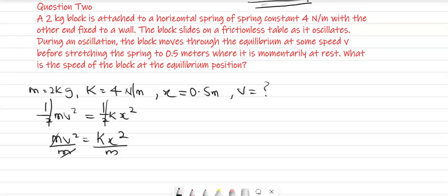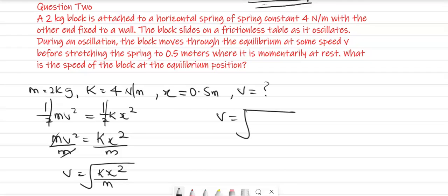If we take the square root of both sides, we would have V is equal to the square root of K X squared over M. From here, V is equal to the square root of K, which is 4, times X, where X is 0.5. So we compute 0.5 squared, all divided by M, which is 2.